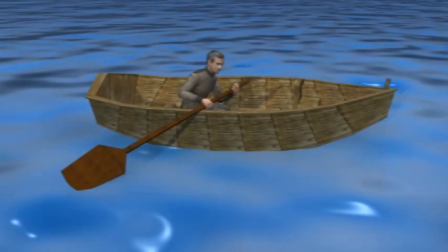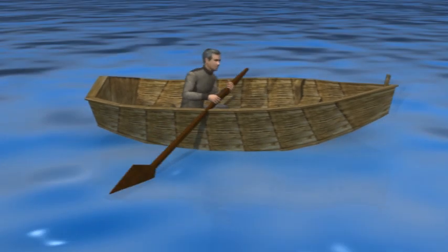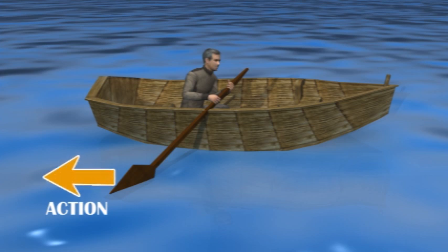Do you know how a person rows the boat? While rowing a boat, the boatman pushes the water backwards with the oars. The water exerts an equal and opposite push on the boat which makes the boat move forward.